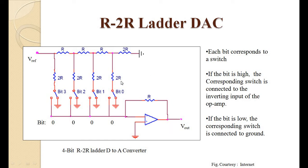Each bit corresponds to a switch. We provide a reference voltage, and there are resistors connected in series (R resistors) and in parallel (2R resistors). The last one is 2R which is grounded. Each line is connected with a switch corresponding to bit 0, bit 1, bit 2, and bit 3. Bit 0 is the least significant bit and bit 3 is the most significant bit.